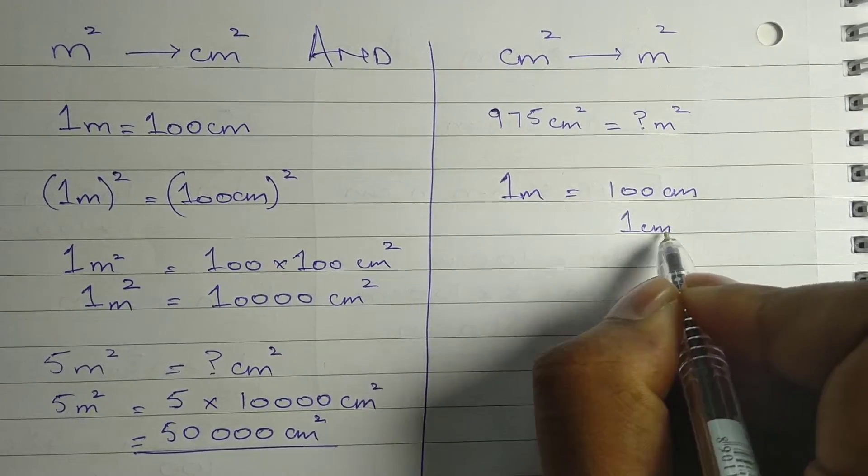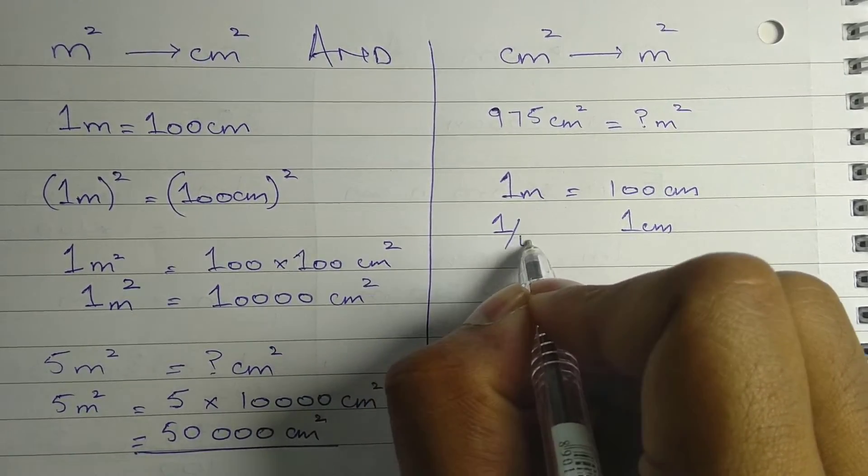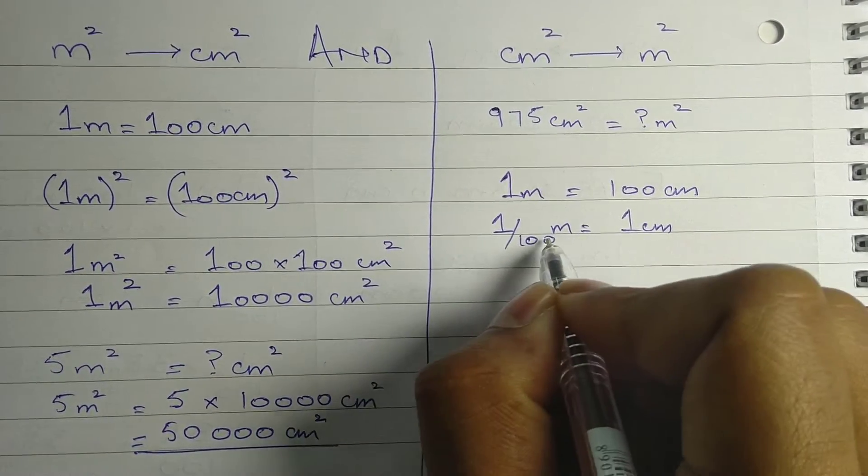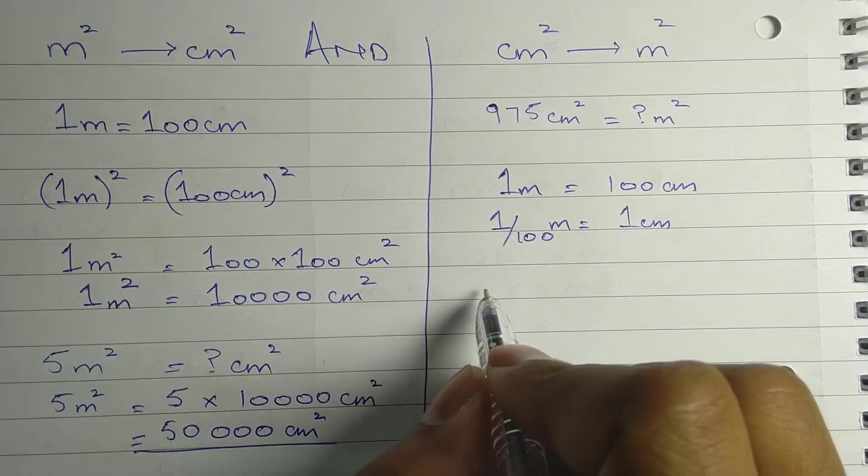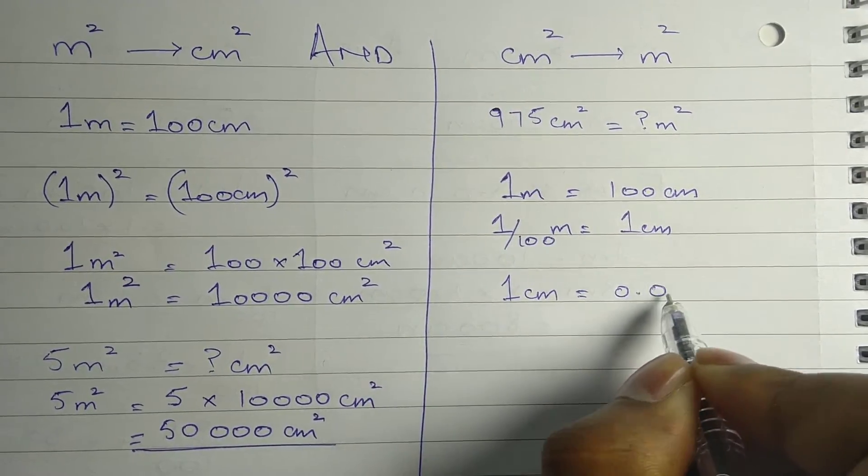So 1 centimeter will be 1 upon 100 meter. This becomes 1 centimeter equals 0.01 meter.